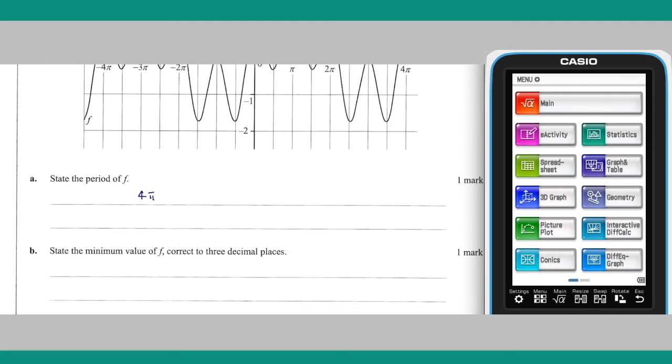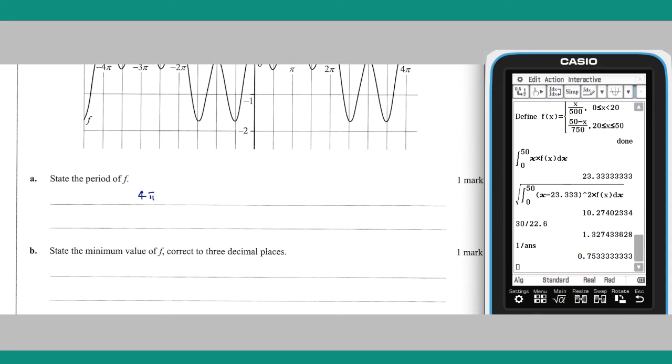Part B: The minimum value of f, correct to three decimal places, can efficiently be calculated using the classpad's fmin command.